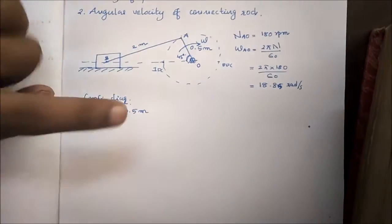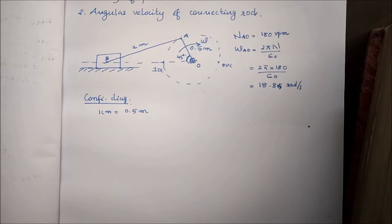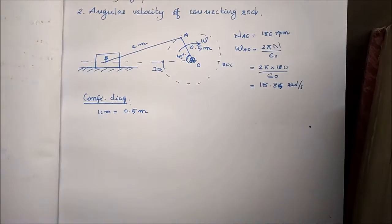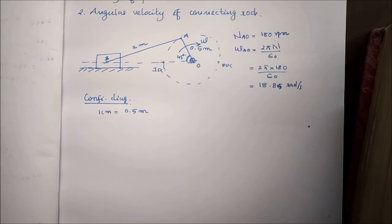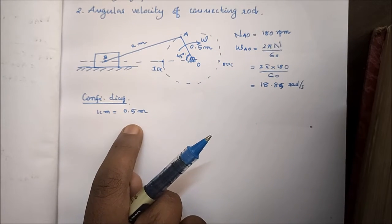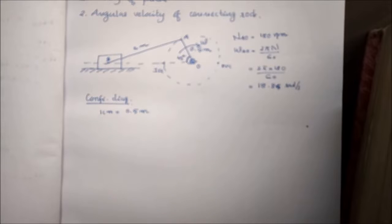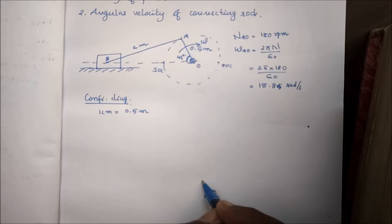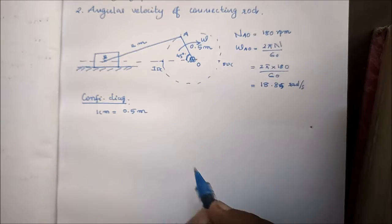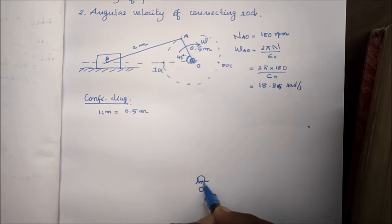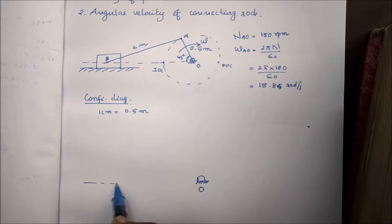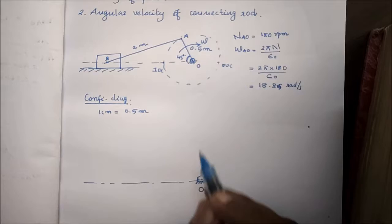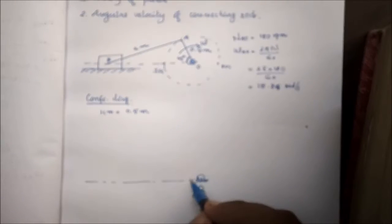If the crank is 0.5m, that would be 2 cms. The connecting rod is 2m, so that would be 2 times 0.5 equals 4 cms. At 45 degrees, we draw the crank at this angle and find the line of action.